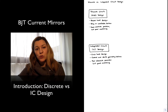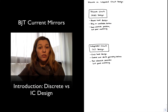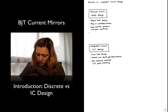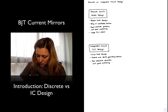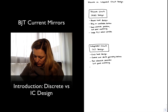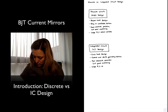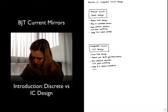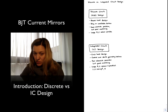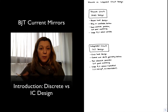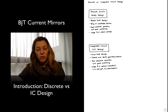In IC design, we are going to try to stay away from resistors and replace them as much as possible with transistors, which occupy much less space. Large R and C values are possible in discrete design, whereas large RC values are impractical in IC design — capacitors must be less than or equal to hundreds of picofarads, and resistors should be replaced with transistors as much as possible, though we may not be able to replace all of them.